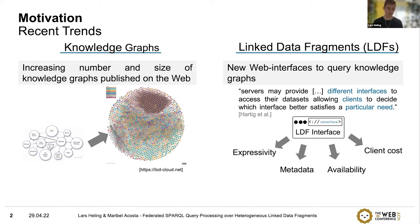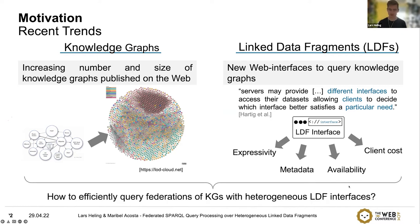The combination of these two developments led us to the question: how can we query efficiently federations that have different types of interfaces — so-called heterogeneous federations.